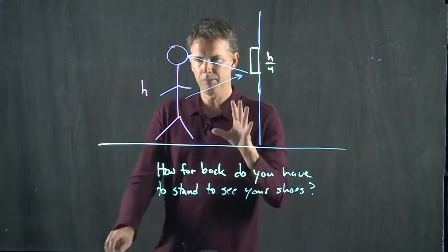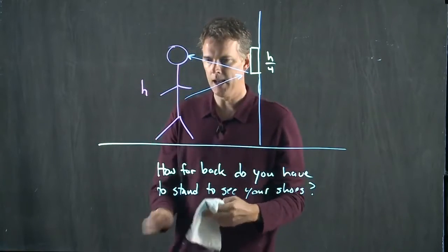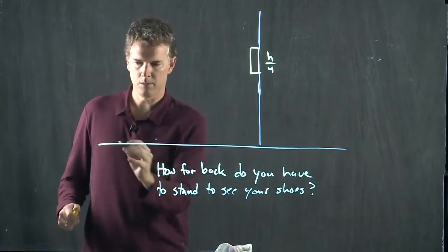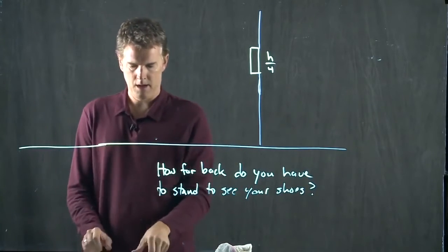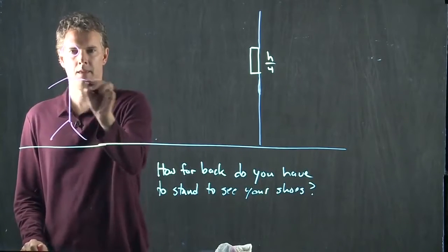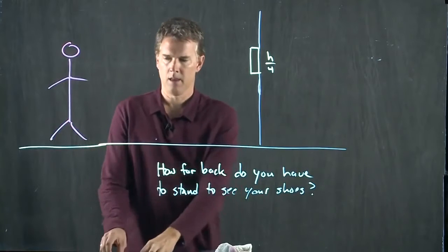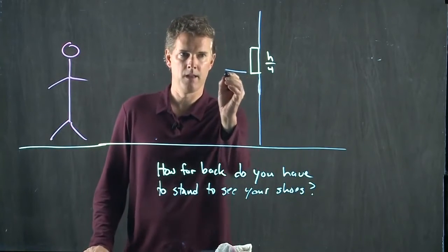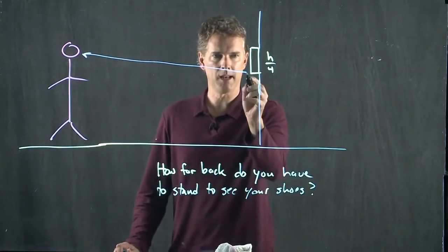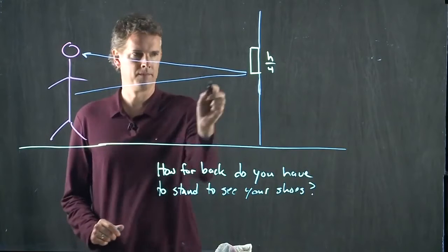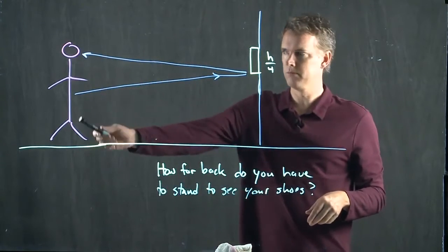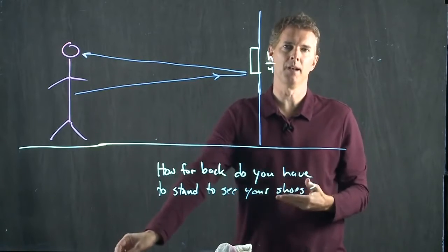But now let's take this person and let's move them far away and see what they can see. We'll extend our floor a little bit. And now that person is right here. The light ray that came to their eye had to come at an exact same angle. Can they see their shoes? No. They see their belly button again.